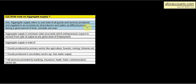Question number 3. Write a note on aggregate supply. Aggregate supply refers to the sum total of goods and services produced and supplied in an economy by all producers and sellers at different prices during a given period of time, normally one year.